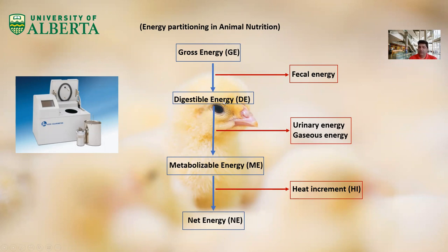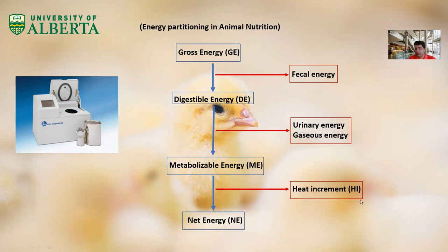From that amount of digestible energy, the animal is going to excrete some energy through urine and through gas. Especially in ruminants, they produce lots of ruminal gases and excrete some energy from there. The remaining energy we call metabolizable energy or ME. And from this amount, some part is excluded as heat increment or HI, and the remaining energy would be net energy or NE.